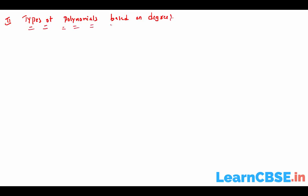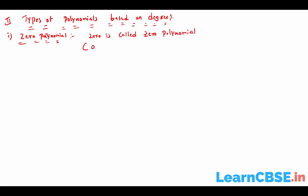Next, types of polynomials based on degree. The polynomials are divided into several types. The first one is zero polynomial. Zero is called the zero polynomial, and its degree is undefined. Remember this carefully: only the number zero is called the zero polynomial, and its degree is undefined.